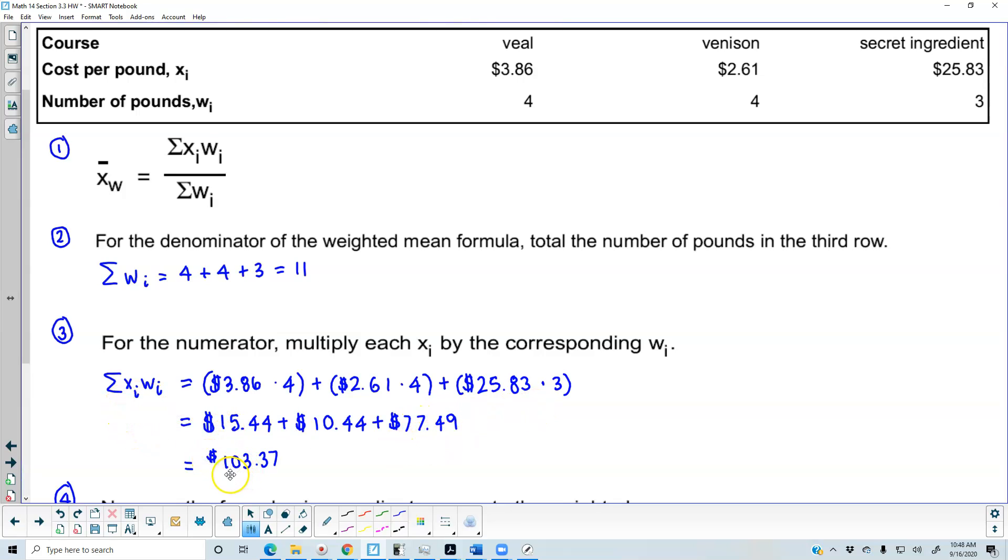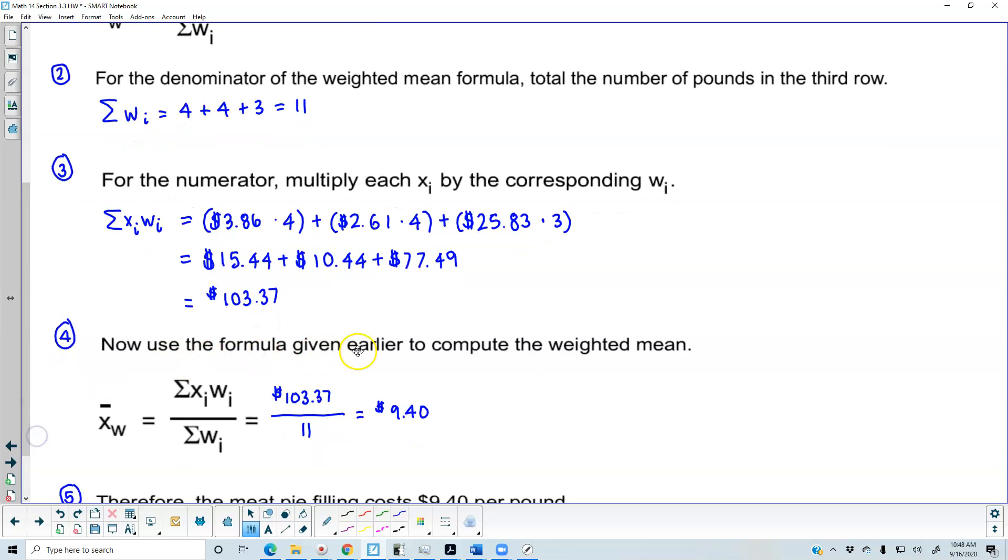When we add those up, we get a total of $103.37. Now we use the formula to compute the weighted mean: $103.37 divided by 11 equals $9.40.